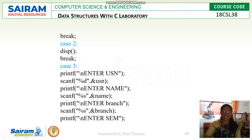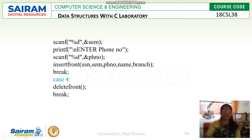We need to insert a new node at the front of the singly linked list. To insert a new node, we need to get the new details: USN, name, branch, semester, and phone number. These five important structure members are needed for creating a new node. Then the insert front function is invoked.